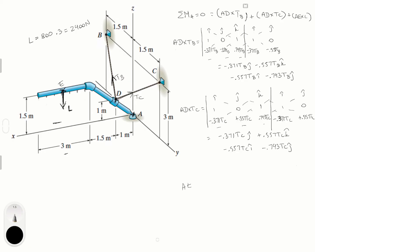For AE cross L — the easiest one — the matrix is i, j, k with AE as [4, 0, 1.5] and L as [0, 0, minus 2400]. Repeating the first and second columns, the positive diagonals all give zero. The negative diagonals yield positive 9600 in the j.